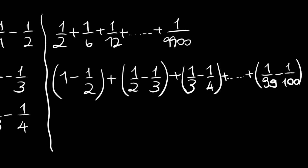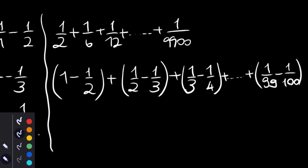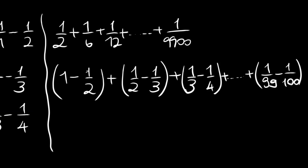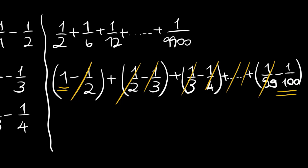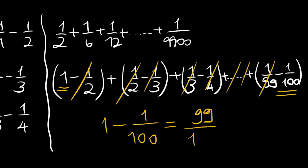Now you can see that the 1 over 2 terms cancel (negative and positive), then 1 over 3 cancels, 1 over 4 cancels, and so on — from the last two terms, 1 over 99 cancels. So we are left with 1 minus 1 over 100, which is 99 over 100. That's our final result. Thank you for watching and see you in the next video!